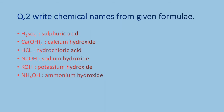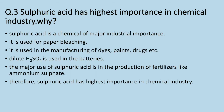Question two: write chemical names from the given formulae. H2SO4 — sulfuric acid. Ca(OH)2 — calcium hydroxide. HCl — hydrochloric acid. NaOH — sodium hydroxide. KOH — potassium hydroxide. NH4OH — ammonium hydroxide.